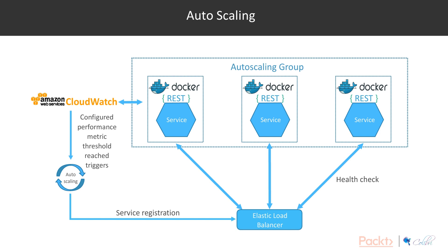You can tell CloudWatch to keep adding one instance every 10 minutes until the average CPU utilisation is less than 50%, and Amazon will keep adding instances until that happens — automatically scaling out your web service layer horizontally on demand. As those new instances come up, the autoscaling group automatically registers them with the load balancer. And when traffic demands subside, you can set a lower threshold: when average CPU is less than 50% over a 10-minute period, remove one instance every 5 minutes. This allows your autoscaling group to scale not only out but back in again.